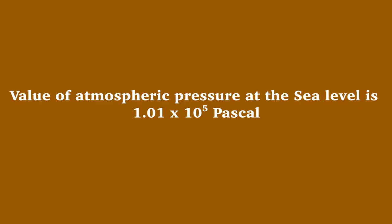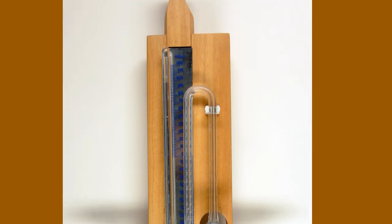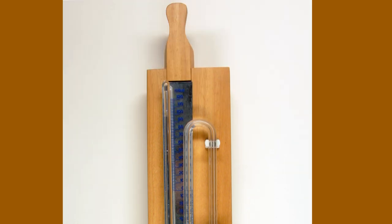The value of atmospheric pressure will change with height. It is measured with reference to the sea level. Value of atmospheric pressure at the sea level is 1.01 into 10 to the power of 5 pascal. Atmospheric pressure is measured by using an instrument called mercury barometer.